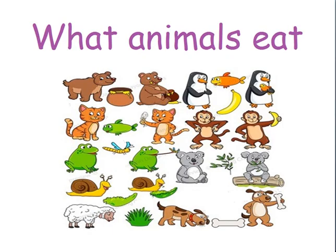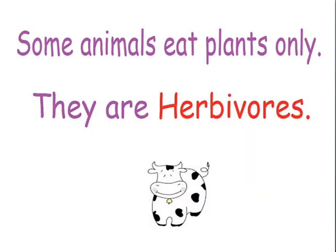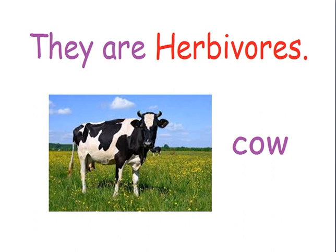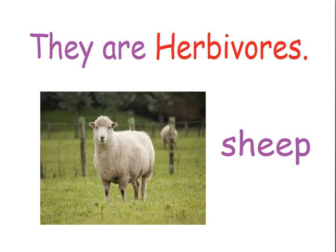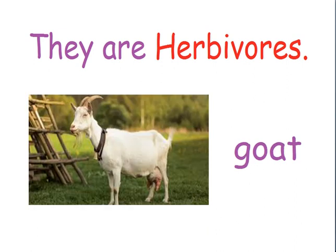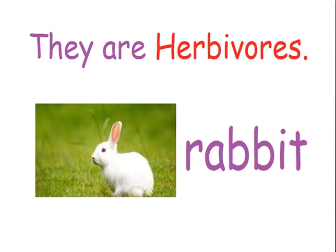What do animals eat? Some animals eat plants only and they are known as herbivores. Some herbivores, or animals that eat plants only, are cow, sheep, goat and rabbit.